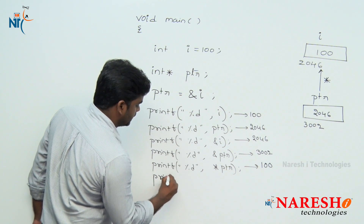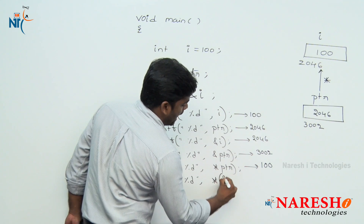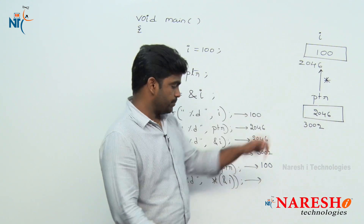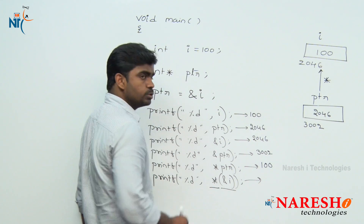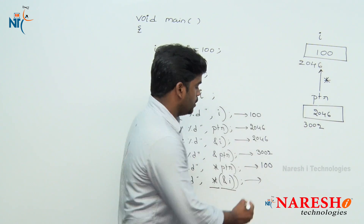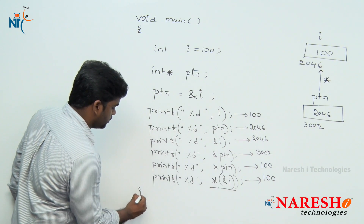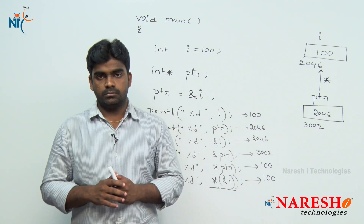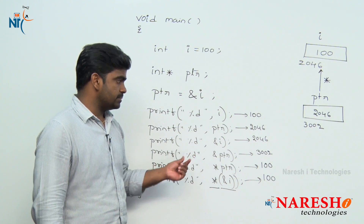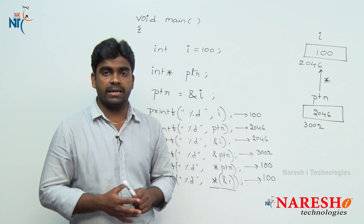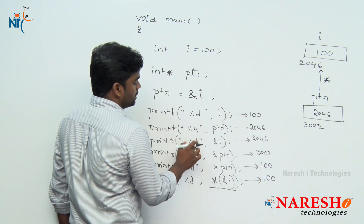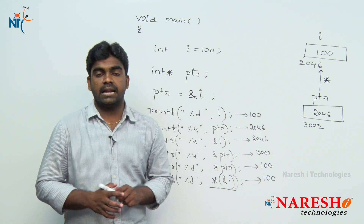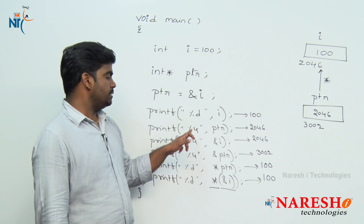And for example, printf %d of pointer-to-address-of-i: the address operator returns 2046, and the pointer operator returns the value inside that location, which is 100, so it prints 100. But remember, in a programming language an address is a positive integer value. Using %d can print negative values, so whenever printing addresses it is better to use %u, which represents only unsigned values, matching the positive-only nature of addresses.